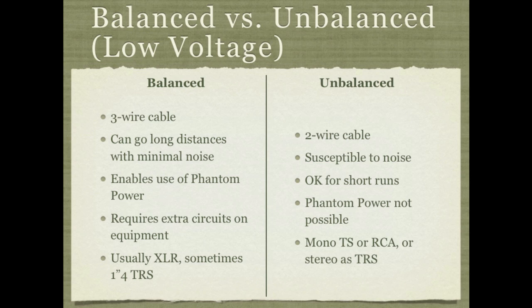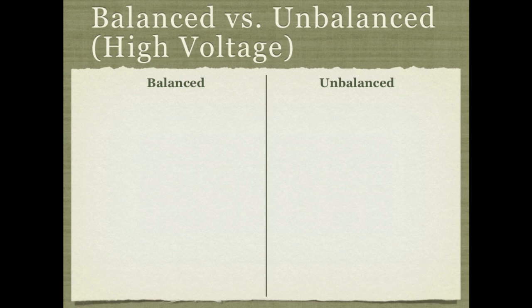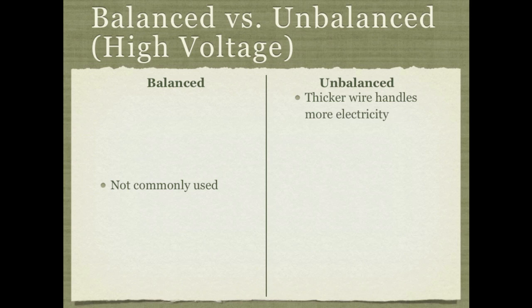You can't use phantom power on an unbalanced cable. Unbalanced cables usually use TS (tip-sleeve) or RCA cables — the phono jacks that used to come on turntables and are often used in home entertainment systems. You can also run dual unbalanced signals on a three-wire TRS cable. For high voltage speaker level signals, you don't usually see balanced connections because they're not necessary.